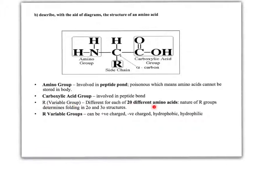Remember there are 20 different amino acids, and R groups vary in their chemical characteristics. This influences how chains of amino acids fold up to form particular structures — it's the interaction between R groups which determines the folding. That deals with the structure of an amino acid.